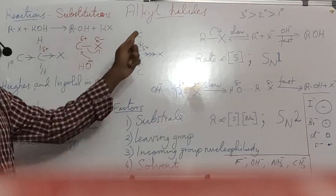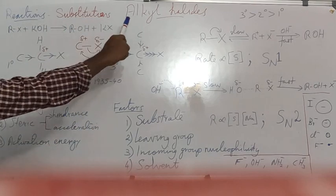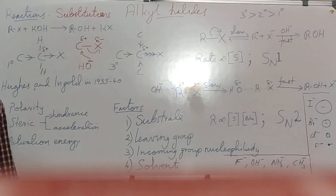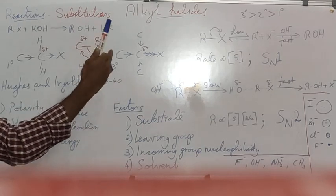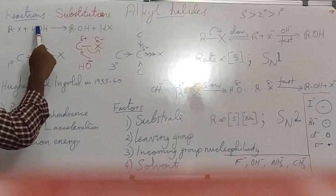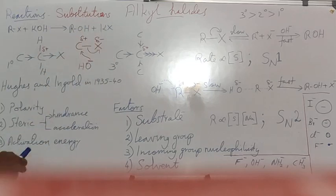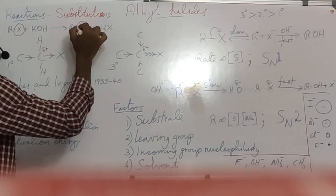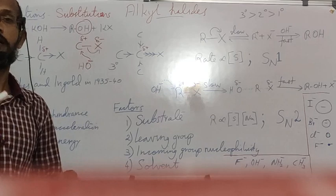In this section, we are discussing reactions of alkyl halides, especially substitution reactions. Alkyl halides will undergo substitution of the halide group with different other groups to generate or introduce different functional groups in a molecule. We can replace the halide group with different other groups. For example, alkyl halide reacted with alcoholic potassium hydroxide gives alcohol plus potassium halide — halide is replaced with hydroxy. Similarly, we can replace halide with different other functional groups.